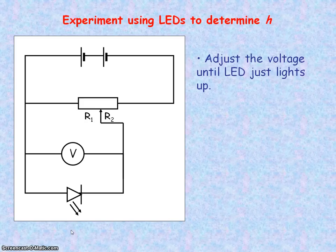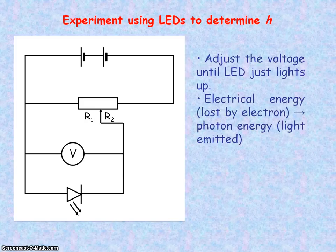When the LED just lights up, the energy conversion taking place in the LED is electrical energy being converted into photon energy, which is the light being emitted. We're assuming 100% efficiency in this conversion.